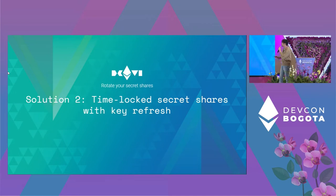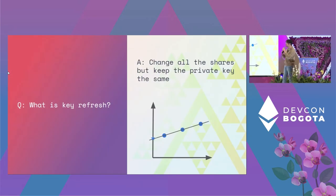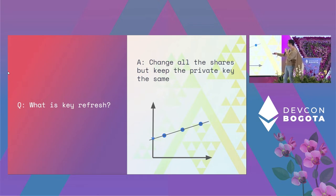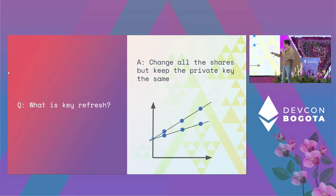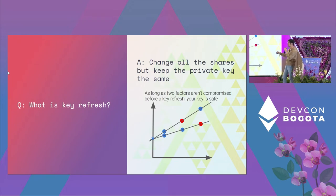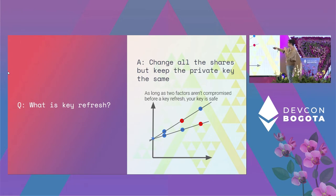Solution two: time-lock shares with key refresh. Key refresh is a way to refresh the shares of a secret sharing scheme while keeping the private key the same. You draw another line through the same Y-intercept — the same key — get rid of the old shares, and all shares are now different but the key is the same. As long as you don't lose two factors on the same line before you did a key refresh, your key is safe. Even if factors on the old line are compromised, they can't redraw that line, because the two lines are completely unrelated.